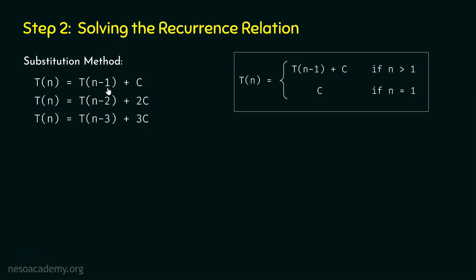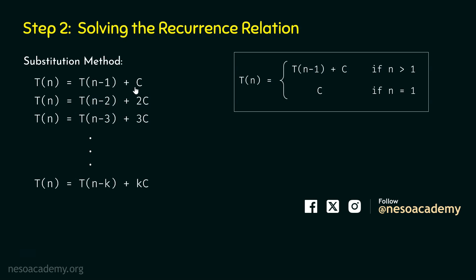We can continue in this way and write T(n) = T(n−k) + k·c for some general k. We can observe the pattern: if we have 3 as the subscript, we have 3 as the coefficient of c; if 2, then 2; if 1, then 1. Similarly, if we have k in the subscript, we have k as the coefficient of c. So T(n) = T(n−k) + k·c.